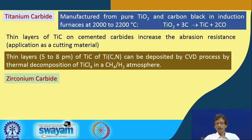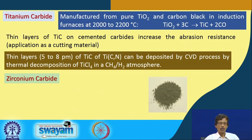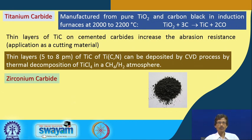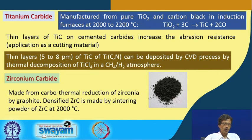An analogous manufacturing method is used for zirconium carbide. In powder form, zirconium carbide is visually similar to activated carbon — black or gray in color — and can be confused with it. It is made by carbothermal reduction using graphite at high temperature, after which the powder is densified by sintering.